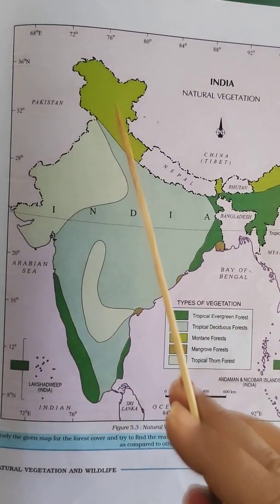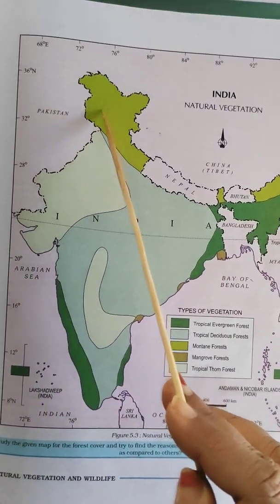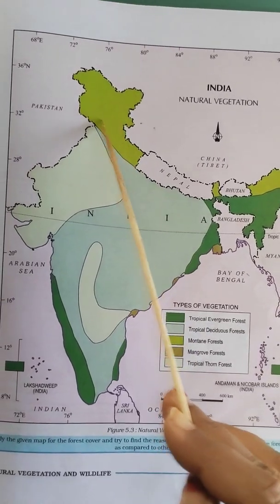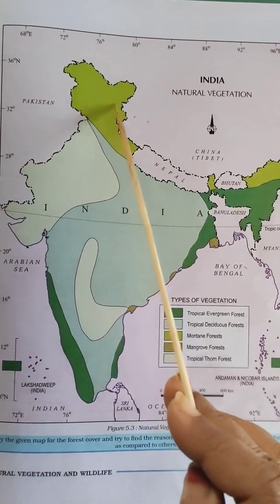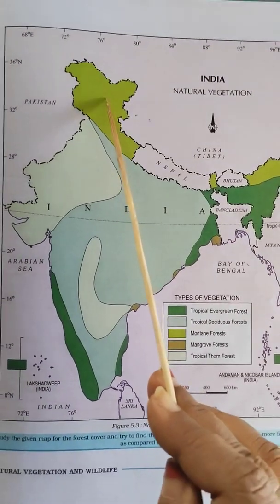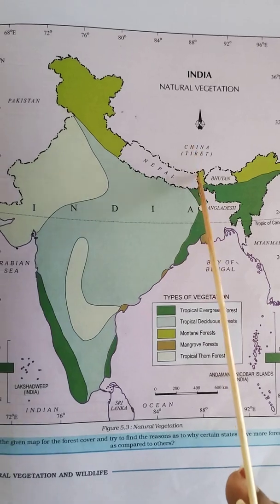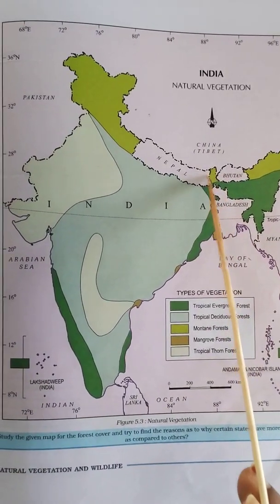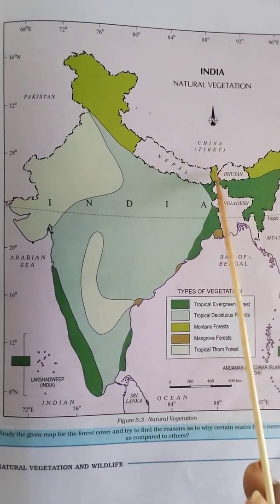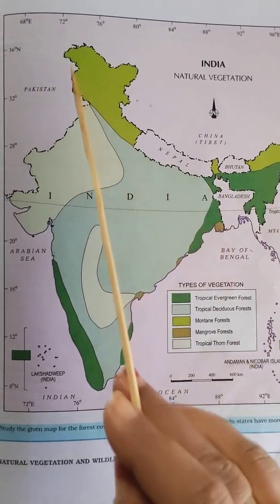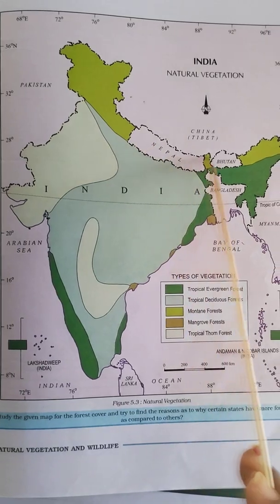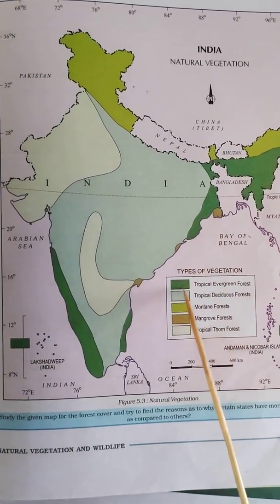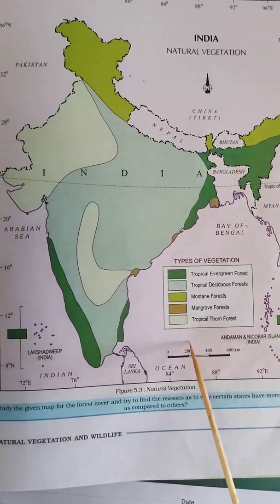They will mark any place on this map and ask you to identify the type of forest found there. For example, in one question paper they marked Sikkim and asked students to identify the forest type — the answer is Montane forest.